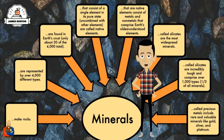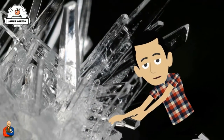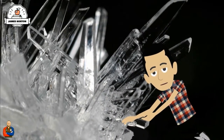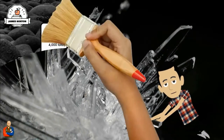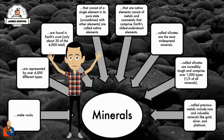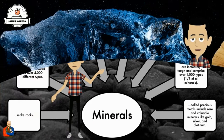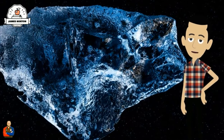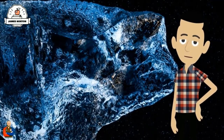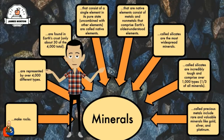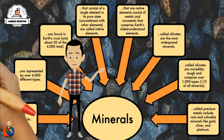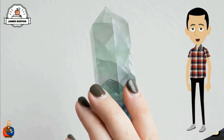Minerals make rocks. They're represented by over 4,000 different types. They're found in earth's crust, but only about 30 of the 4,000 total are commonly found. Minerals that consist of a single element in its pure state, uncombined with other elements, are called native elements. Minerals that are native elements consist of metals and non-metals that comprise earth's oldest understood elements.